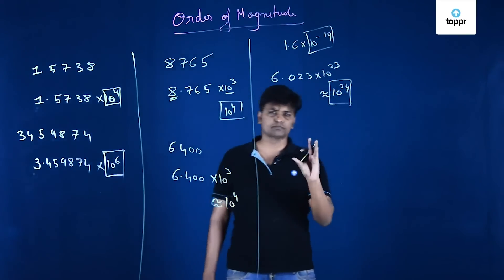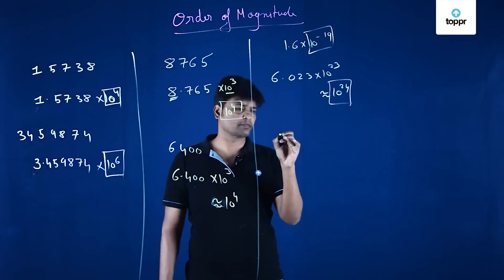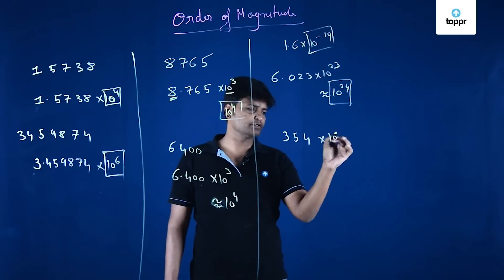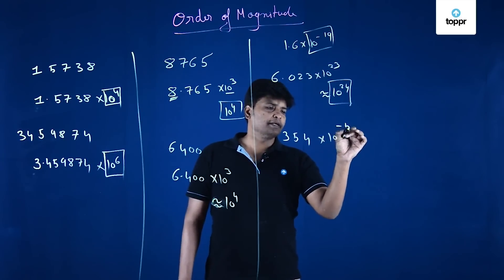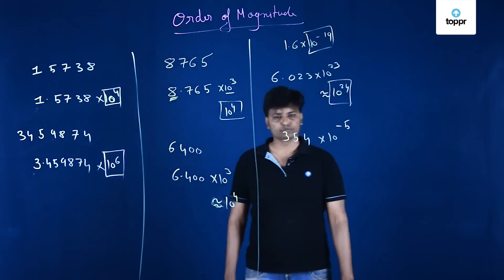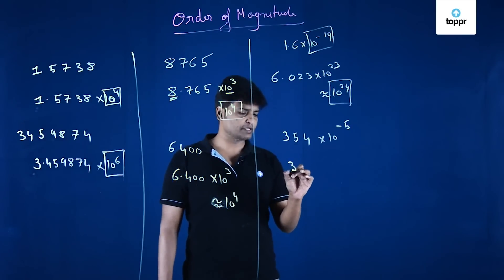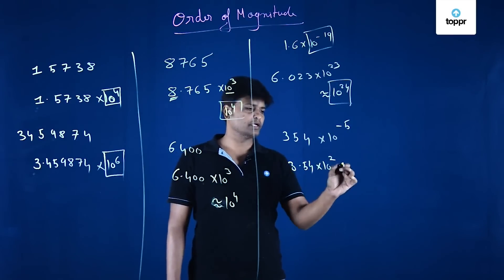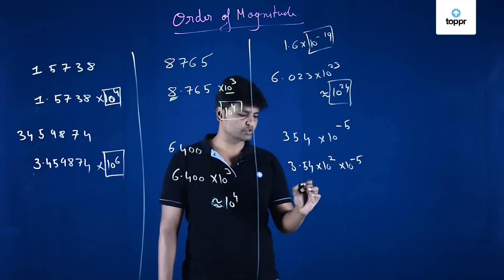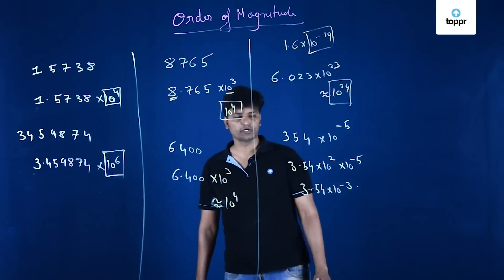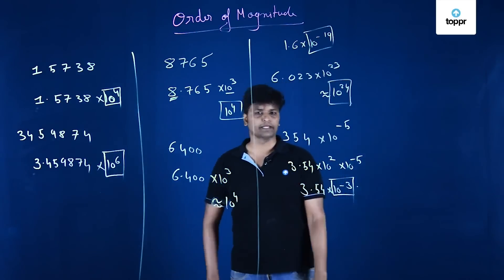Let us take some different numbers. Consider 354 × 10^-5. I convert it: 3.54 × 10^2 × 10^-5, which gives 3.54 × 10^-3. The leading digit is 3, which is less than 5, so the order of magnitude is 10^-3.